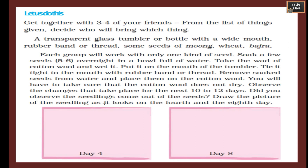Activity: Get together with three to four friends. You will need a transparent glass tumbler or bottle with a wide mouth, a rubber band or thread, and some seeds of moong, wheat, or bajra — each group works with only one kind. Soak a few seeds overnight in a bowl of water. Wet a wad of cotton wool, put it on the mouth of the tumbler, and tie it tight with a rubber band. Remove soaked seeds and place them on the cotton wool, making sure the cotton wool does not dry. Observe changes over the next 10 to 12 days.